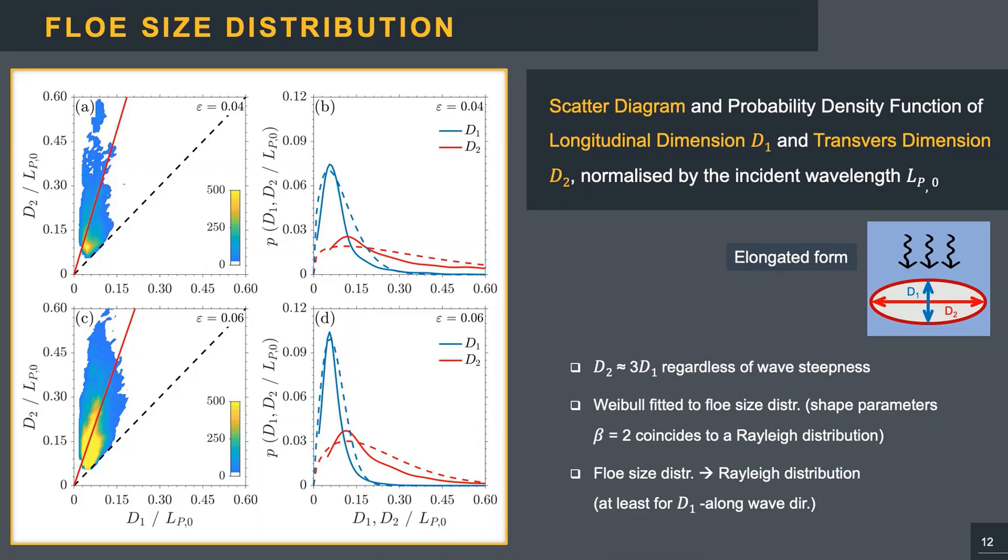Then the Weibull distributions, the dashed lines, are fitted to the empirical PDFs. And when the beta shape parameter is equal to 2, the Weibull distribution degenerates to a Rayleigh distribution, which is linked with the wave statistics. So we can see that PDF of floe size in the wave direction tends to the same statistical distribution of the incident wave field as the steepness increases.